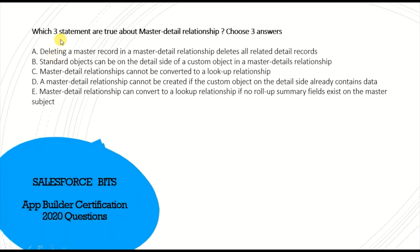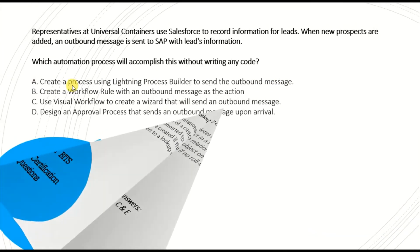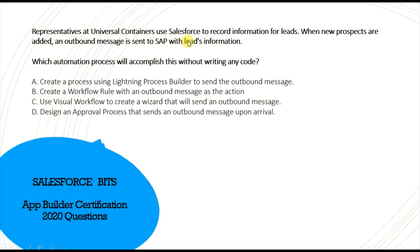Next question: which three statements are true about master-detail relationships? The correct answer is A, C, and E. A: deleting a master record deletes all associated detail records. C: a master-detail relationship cannot be converted into a lookup relationship. E: a master-detail relationship can be converted to a lookup relationship if no roll-up summary fields exist on the master object. Other options — that a standard object can be on the detail side, or that a master-detail relationship cannot be created if a custom object is on the detail side — are both false.